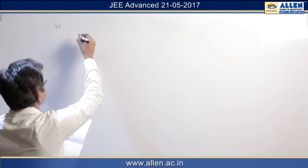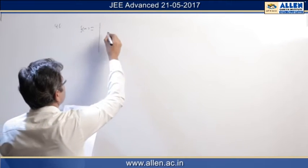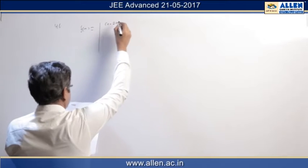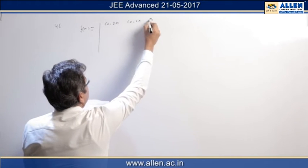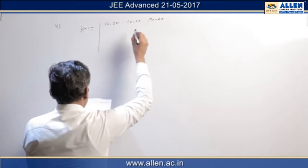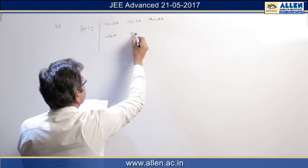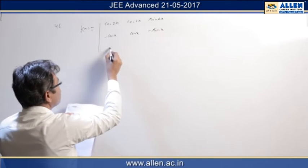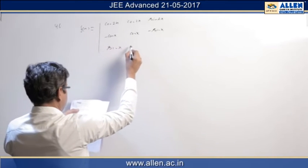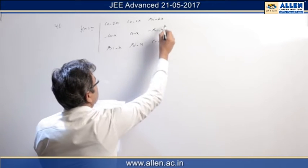In the problem they gave one determinant f(x) equal to cos 2x, cos 2x, sin 2x, minus cos x, cos x, minus sin x, sin x, cos x.